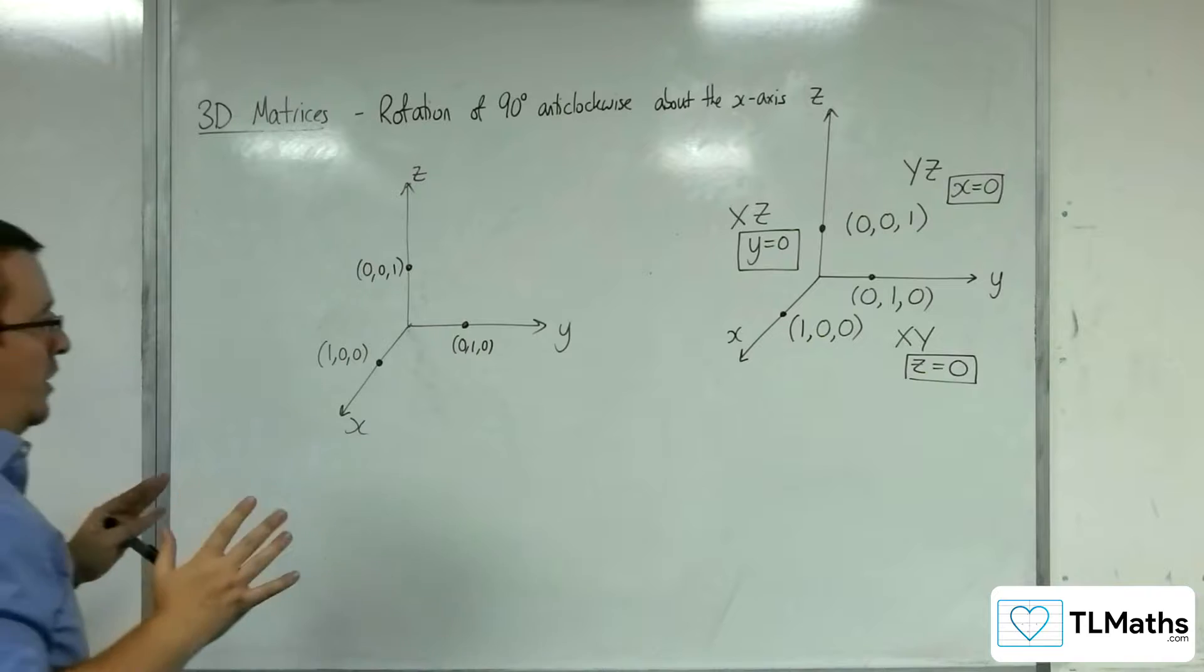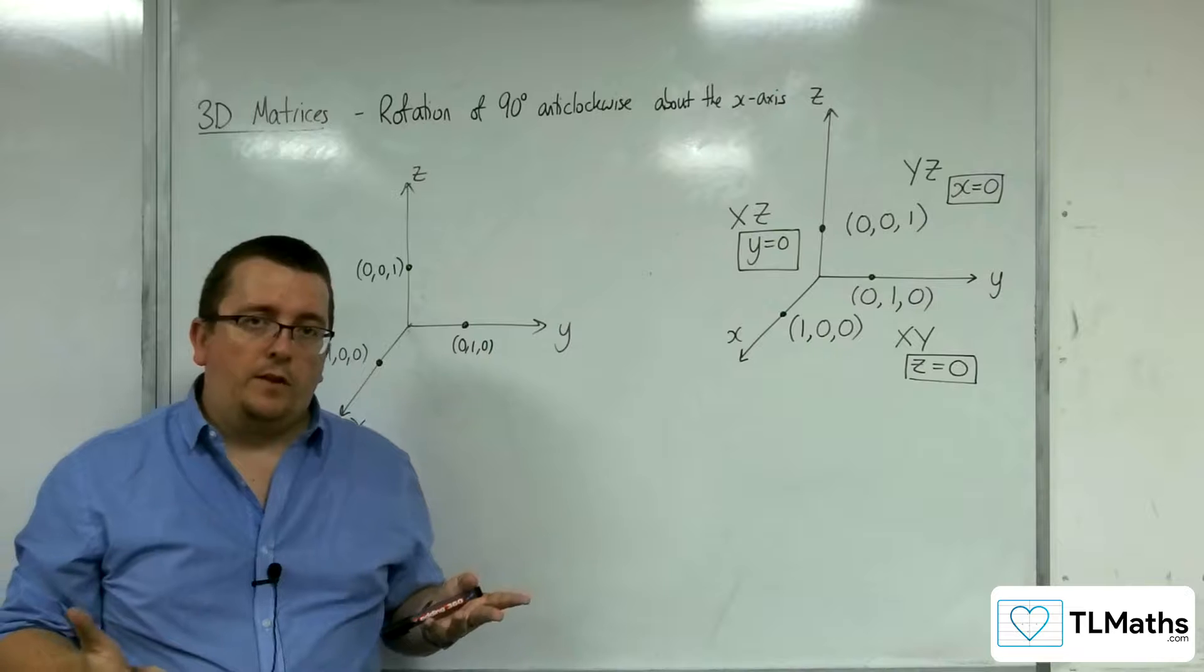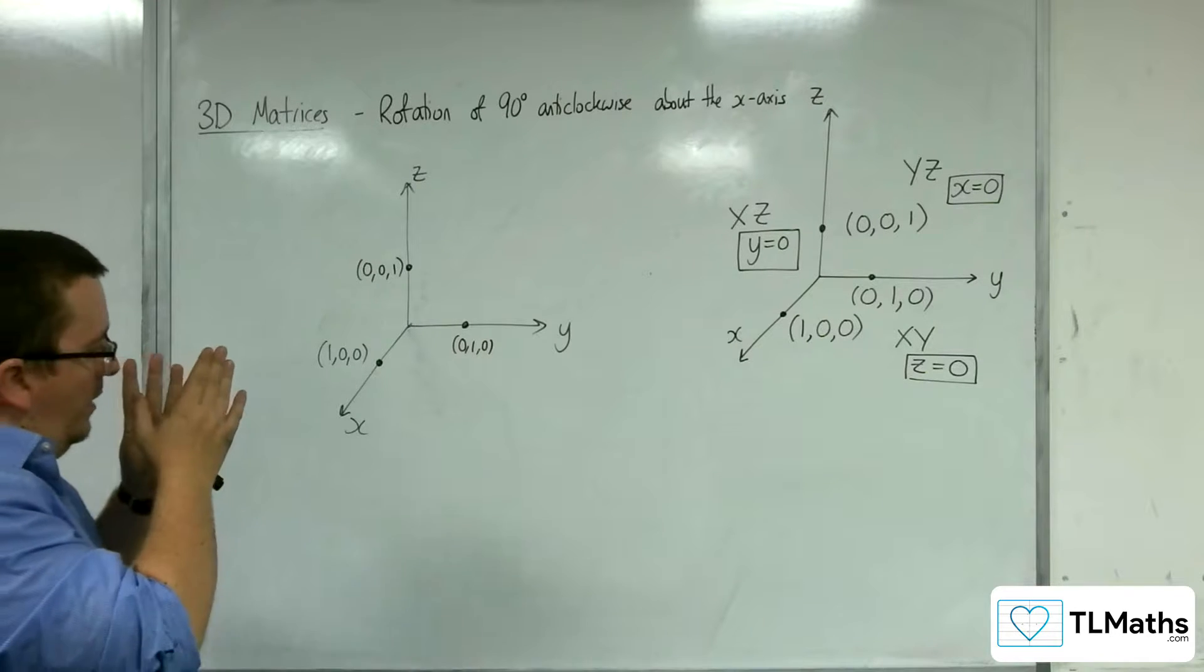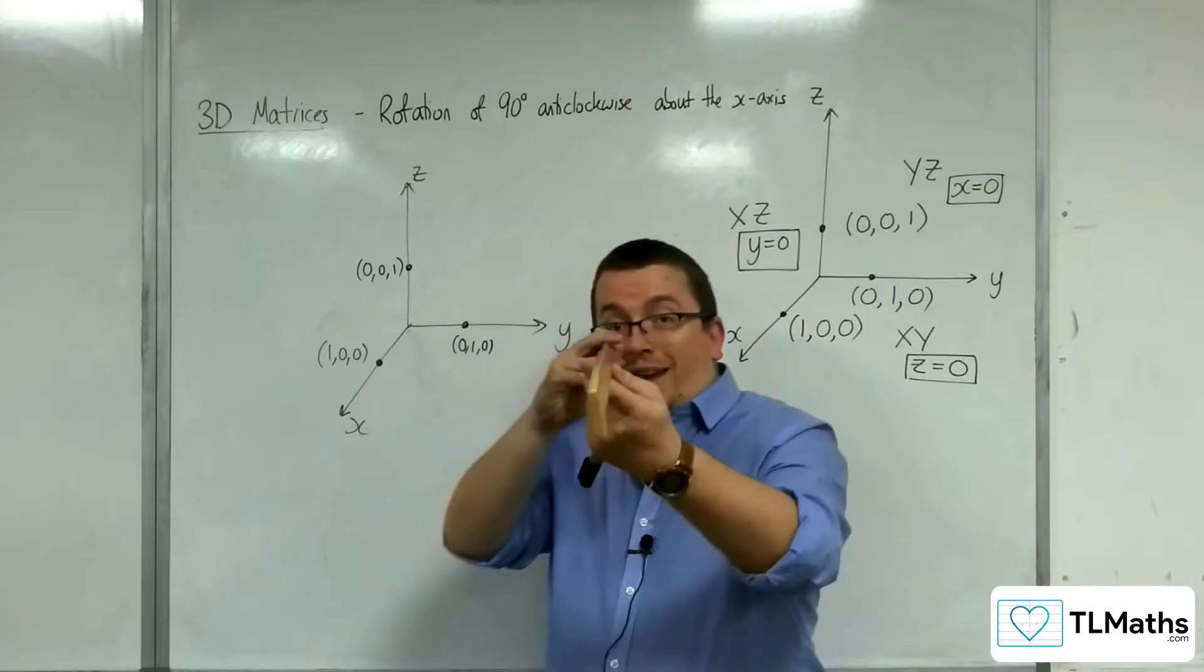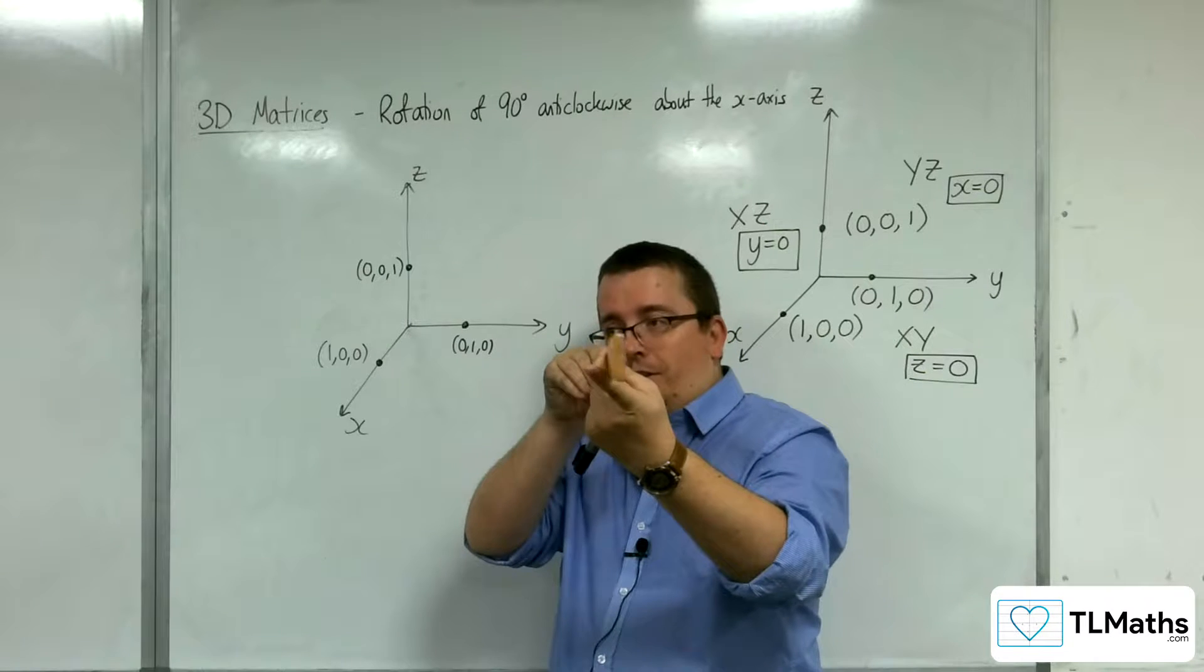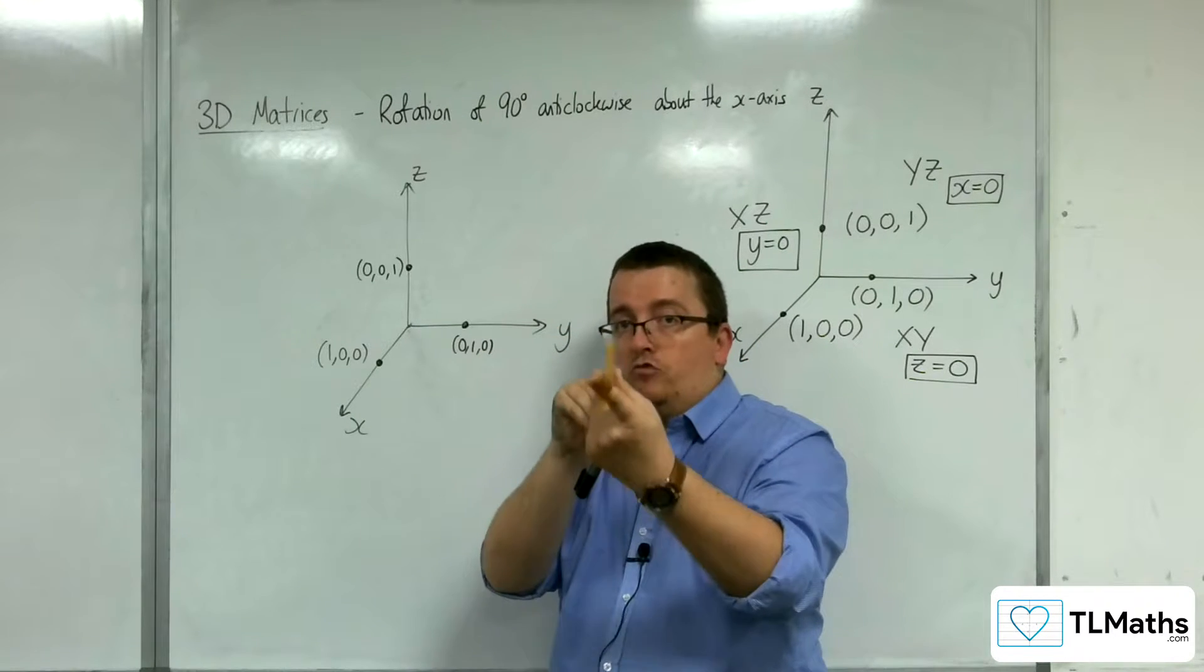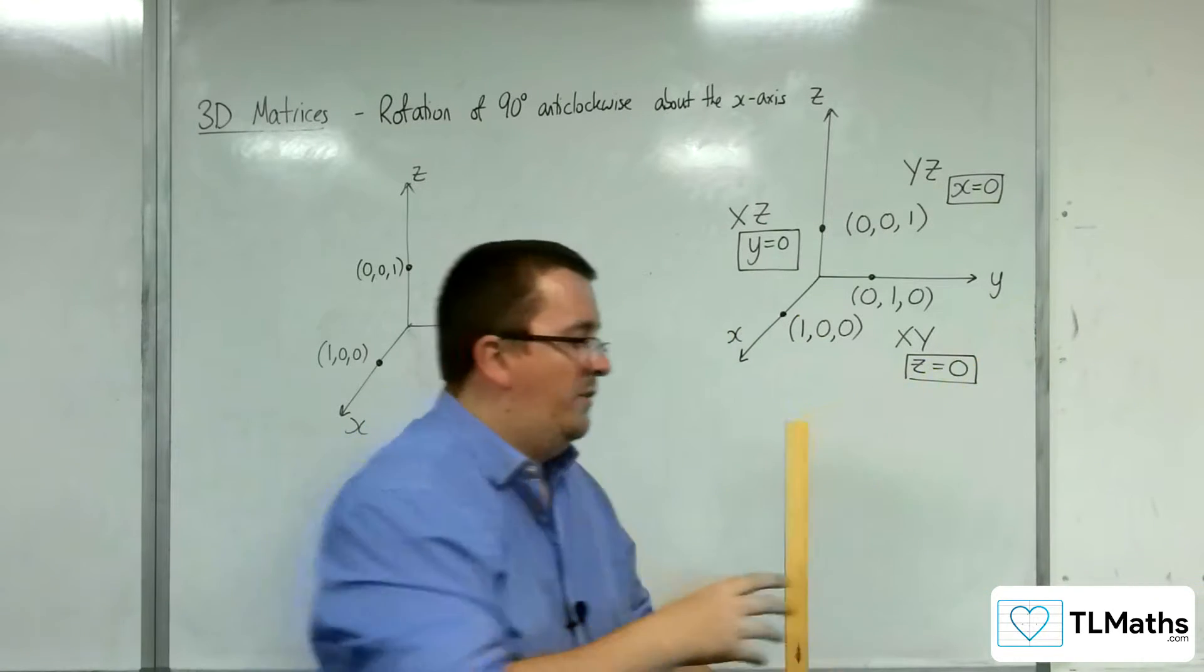So, this is where we've got to be careful with how we've drawn our axes. The way that you want to make sure that you do this is, because we're looking about the x-axis, imagine looking down the end of the x-axis. So, the ruler here is the x-axis, and everything is going to rotate around that x-axis. Anything that is on the x-axis remains perfectly still and fixed. That's the thing that we've got to be clear on.